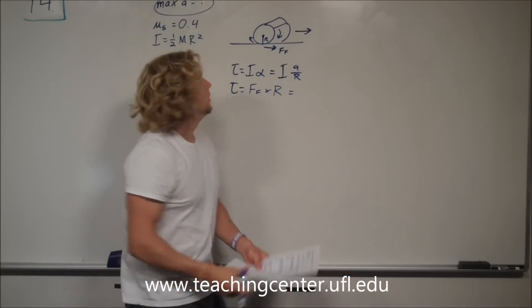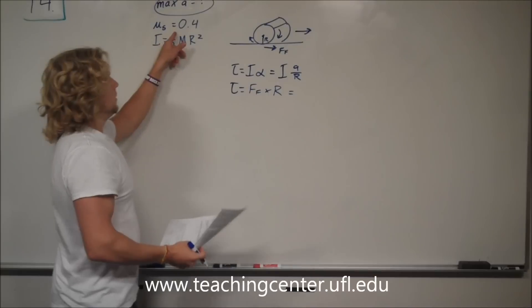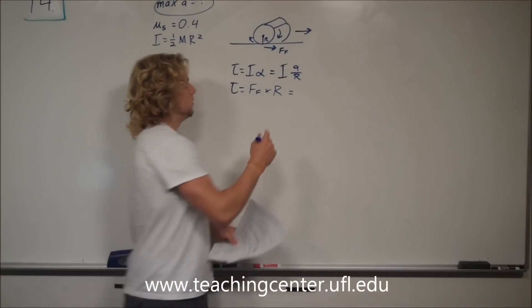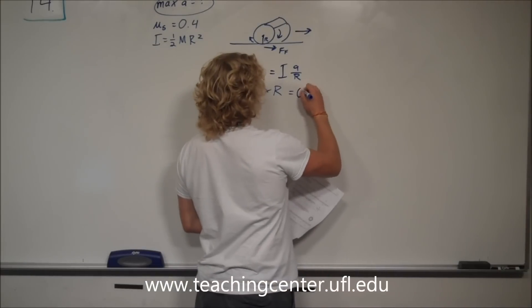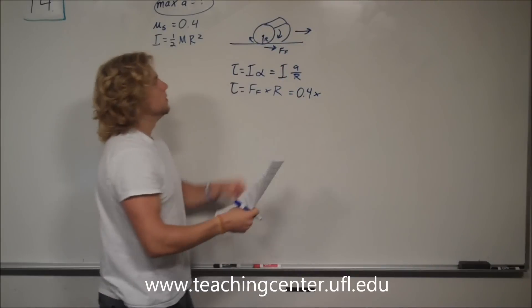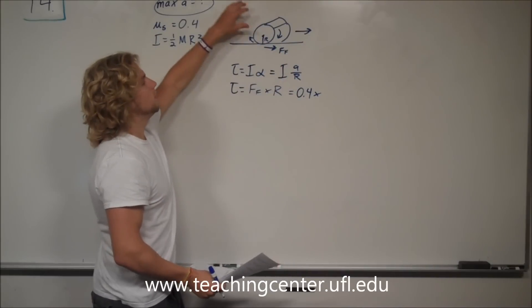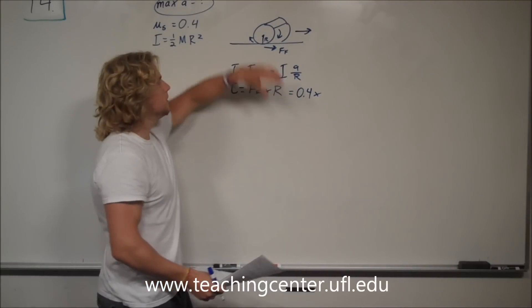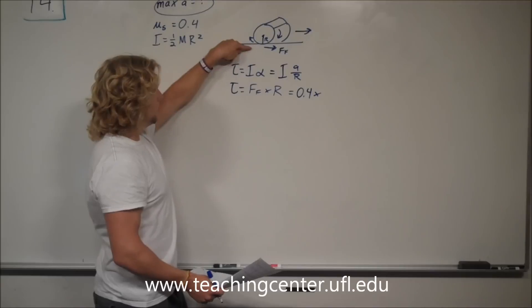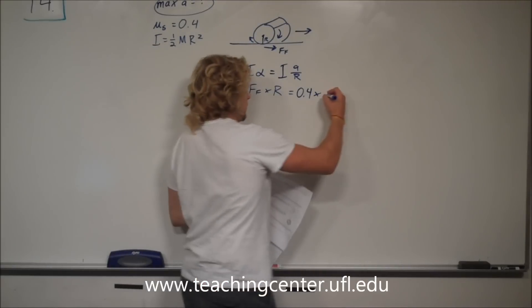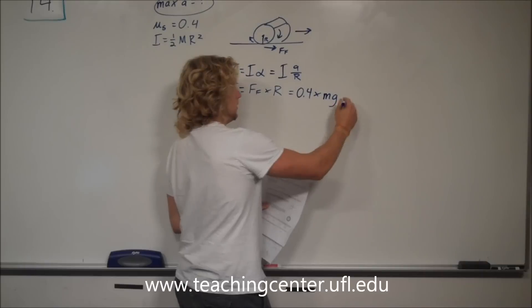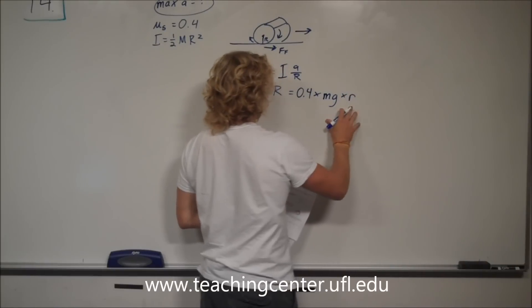Now, frictional force is mu s times the normal force. So, now we know that it's 0.4 times normal force, which is just going to be mg because it's just going down, there's no angle, there's no nothing. So, the weight is being opposed by the ground, which means that we can represent it like this,